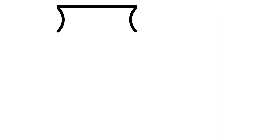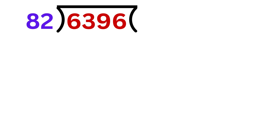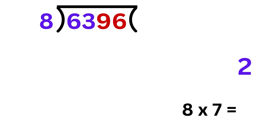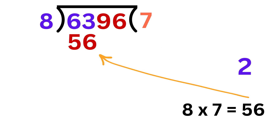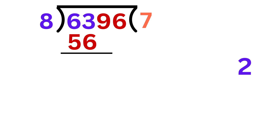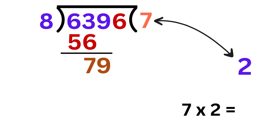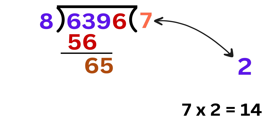Now let us try to divide 6396 by 82. As a first step, write 8 here and 2 here. Now 8 times 7 is 56, so write 7 here and 56 here. The remainder will be 63 minus 56 or 7. Now bring this 9 to get 79. Also 7 times 2 is 14, so subtract 14 from 79 to get 65.